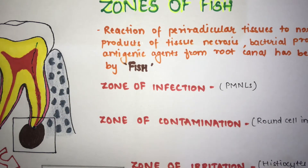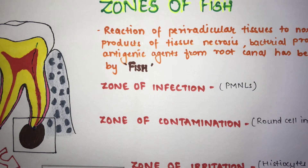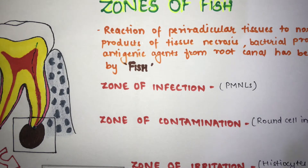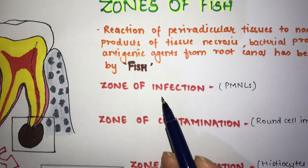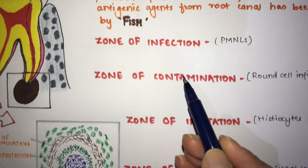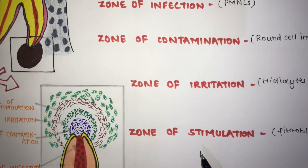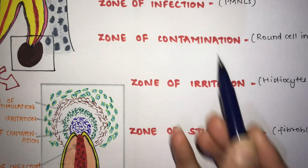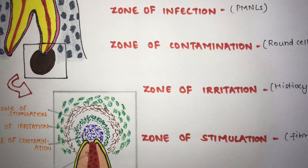Fish established experimental foci of infection in the jaws of guinea pigs by drilling openings in the bone and packing them with wool fibers saturated with microorganisms. From this, he identified four well-defined zones: the Zone of Infection, Zone of Contamination, Zone of Irritation, and Zone of Stimulation. This is a very commonly asked topic.